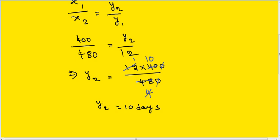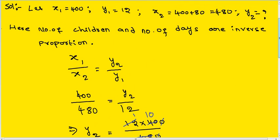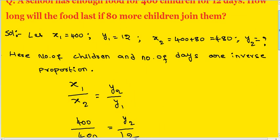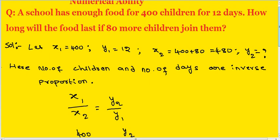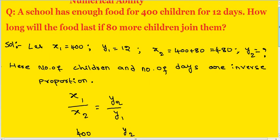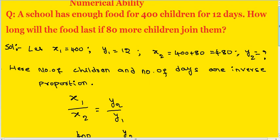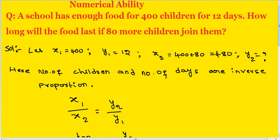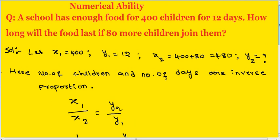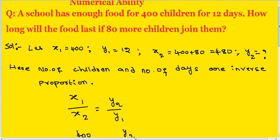Understand? How many days? 10 days. A school has enough food for 400 children for 12 days — the food will last 10 days if 80 more children join them.